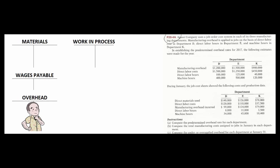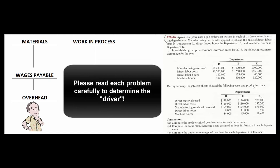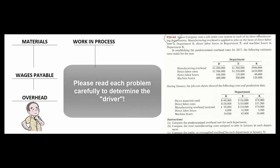One final caveat: different departments and different companies are going to have different rules. It could be direct labor cost, direct labor hours, machine hours, kilowatts of electricity — it could be anything. Read the problem carefully. Students who see direct labor cost in the first problem sometimes think that's the rule for all companies and all departments. Each department and each company will use a different driver in the denominator, so just be careful of that.